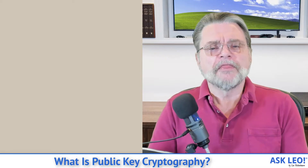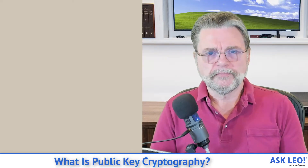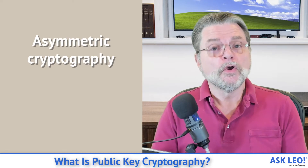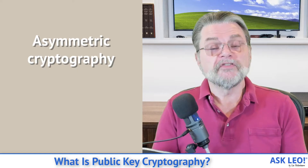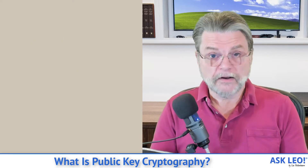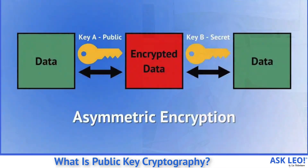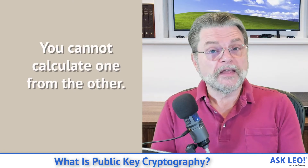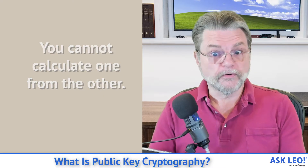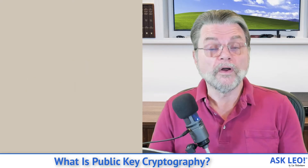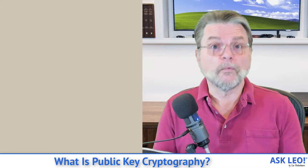Now things get strange. The most important concept in public key cryptography, which is more correctly referred to as asymmetric cryptography, is simply this. There exist mathematical formulas that will produce two numbers. Those two numbers, which are very large, have two very interesting characteristics. The first is that you cannot use one to calculate the other. In other words, if you're given just one of those numbers, there's no way to figure out what the other number is.